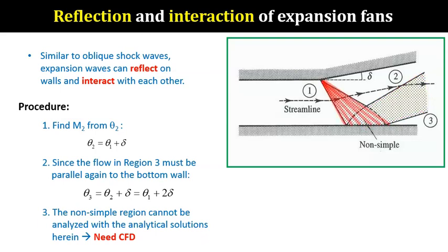Because the fan consists of individual weak waves that span out at slightly different angles, different weak waves will reflect from slightly different locations on the lower wall. This produces quite a big region of complex flow interaction.